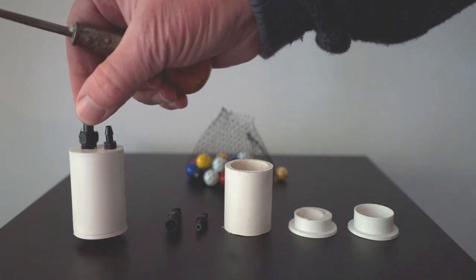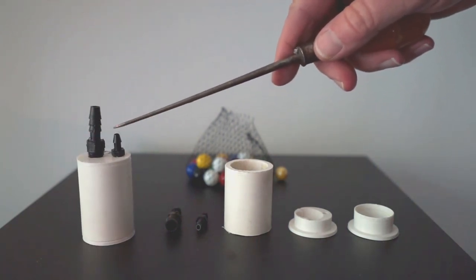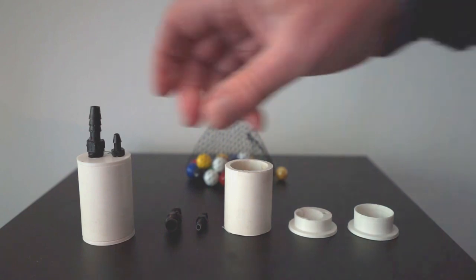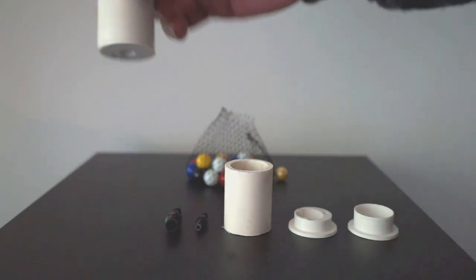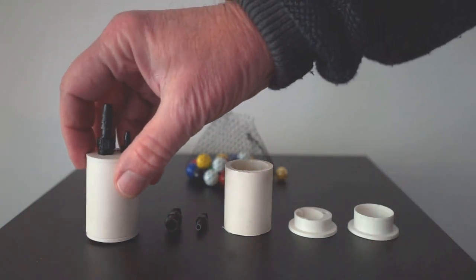This is the finished unit. Air comes in here, water comes out here, water goes in the bottom, and the marble is in there as a check valve.